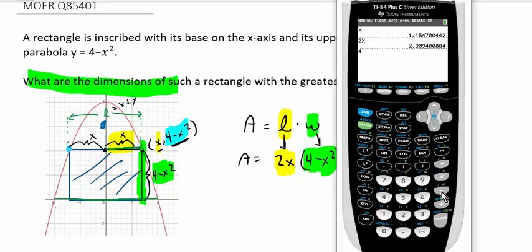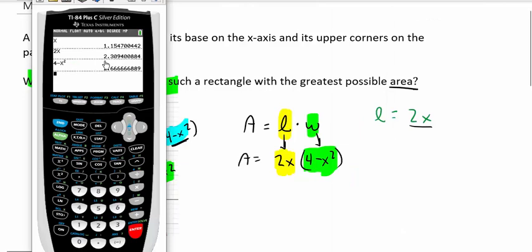And if I type in 4 subtract x squared, that'll give me the other dimension of the rectangle, which we denoted as its width. So it's looking like, to 4 decimal places, the length is about 2.3094, and what we call the width is about 2.6667.